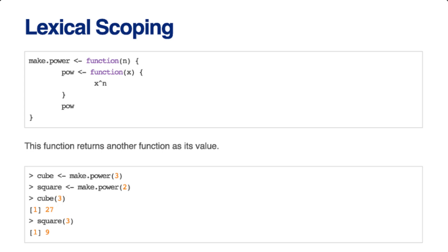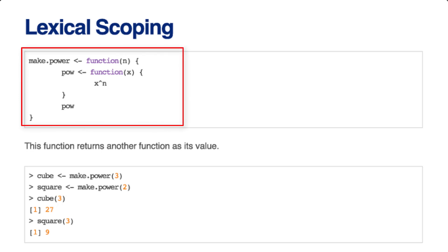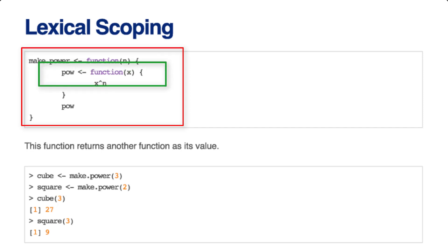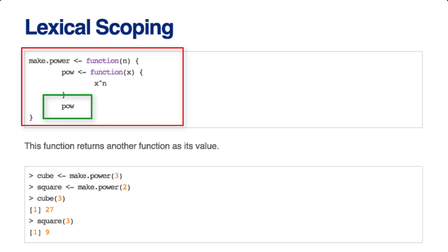I'm going to define a very simple constructor function — the idea that one function constructs another. I want to create a function called make.power, which takes as input a number n. Inside make.power, I define another function called pow, which takes an argument x. The pow function raises x to the power n, and make.power returns pow as its return value. Inside pow, x is a formal argument, but n is a free variable because it's not defined inside pow. However, n is defined inside make.power, which is the environment in which pow was defined, so pow will find the value of n there.